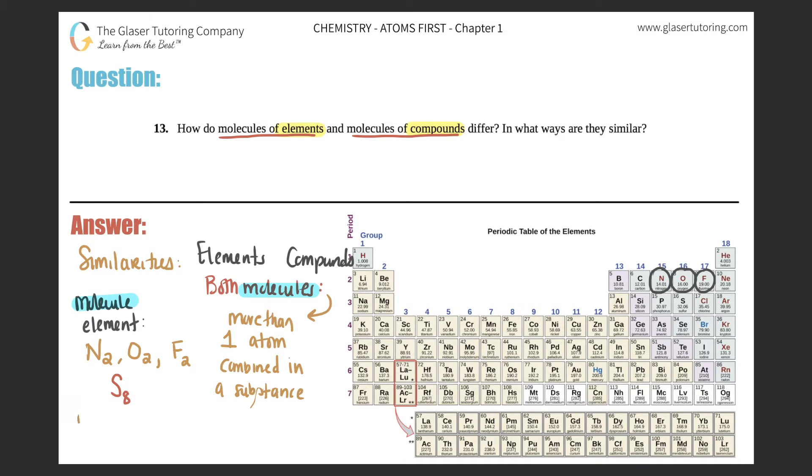For example, a molecule of a compound—you will have more than one atom in any molecule of any compound because you have more than one element in them. So compound, remember, is just the combination of two or more elements. So NaCl, or H2O, or C6H12O6—these have definitely more than one atom. In this one, NaCl, there's two atoms here.